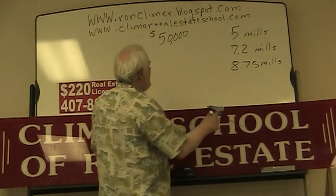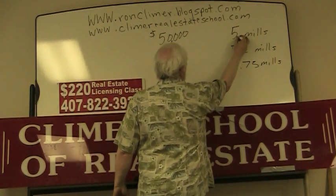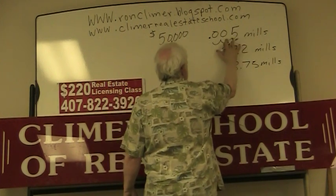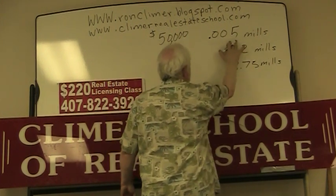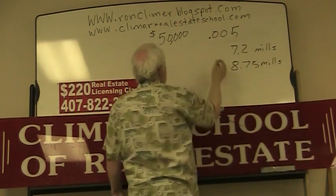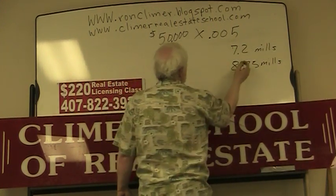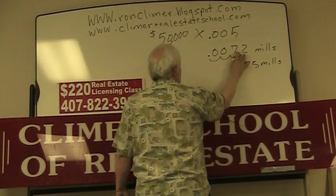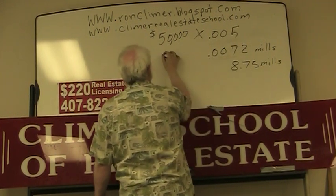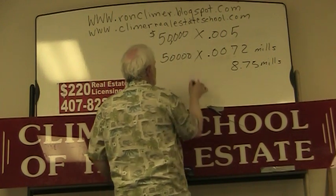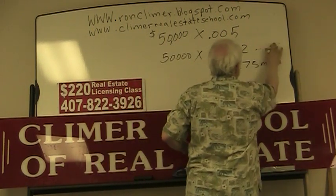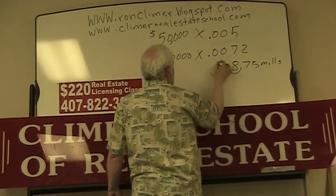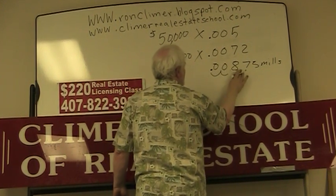For 5 mills, we take the decimal and move it 1, 2, 3 places over, so .005 is 5 mills. For 7.2 mills, we move the decimal 1, 2, 3 places over, and it looks like .0072. And for 8.75 mills, we move the decimal 1, 2, 3 places over, giving us .00875.